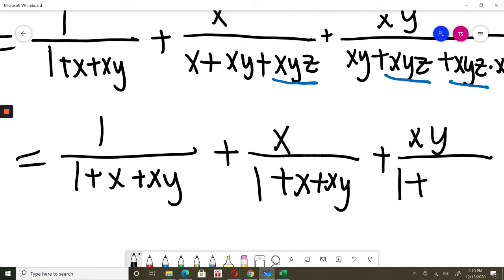This is 1, 1 times x. 1 times x is just x. And plus, last part will be xy.